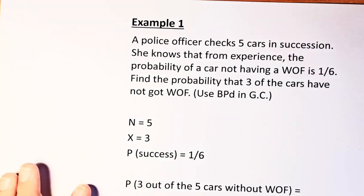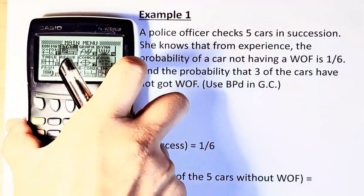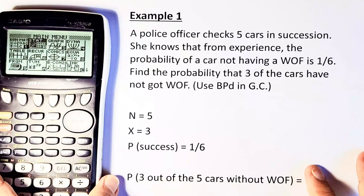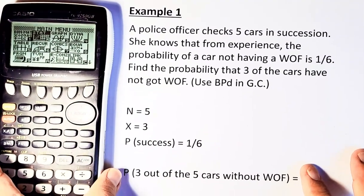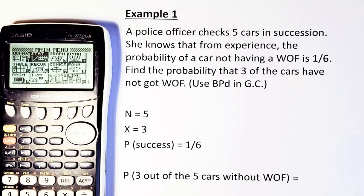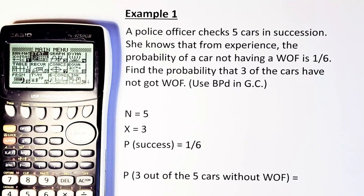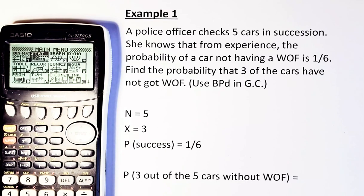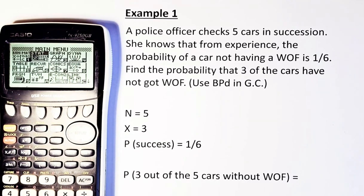Now we are going to bring down the graphic calculator. We are ready to go. So the question is, a police officer checks 5 cars in succession. She knows that from experience, the probability of a car not having a WOF is 1 out of 6. Find the probability that 3 of the cars have not got WOF. How to do this?